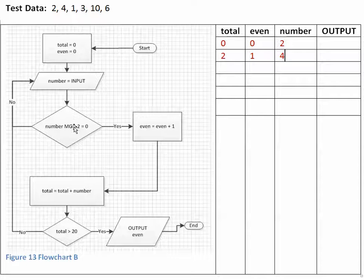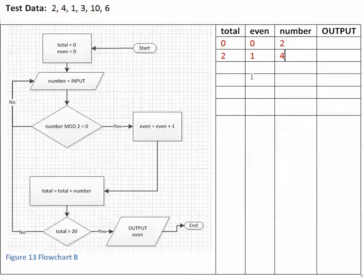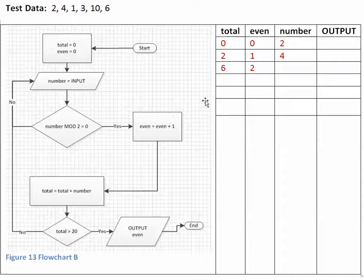Now number mod 2 equals 0 — there's no remainder — so we increment even by 1, making it 2. We follow the arrow down and total is assigned the value of total plus number. The current value of total is 2 and number is 4, so 2 plus 4 equals 6.